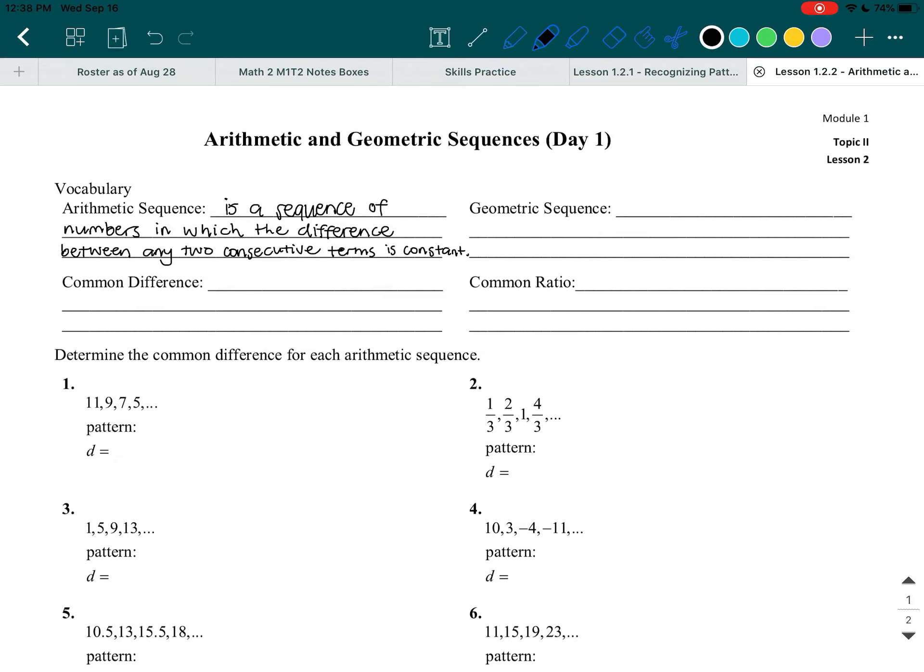All right, and then we move on to a geometric sequence, which is a sequence of numbers in which the ratio between any two consecutive terms is a constant.